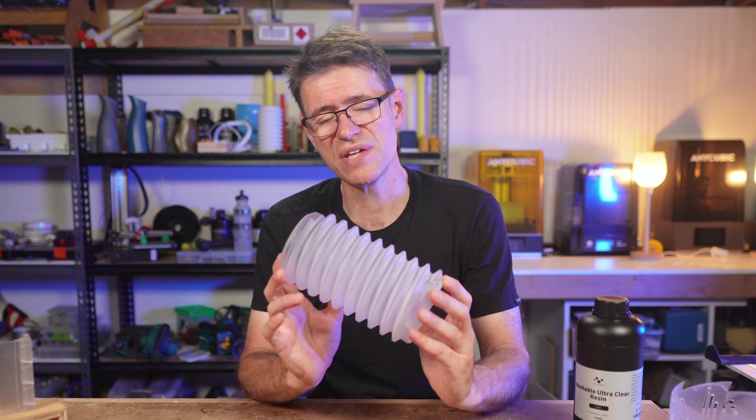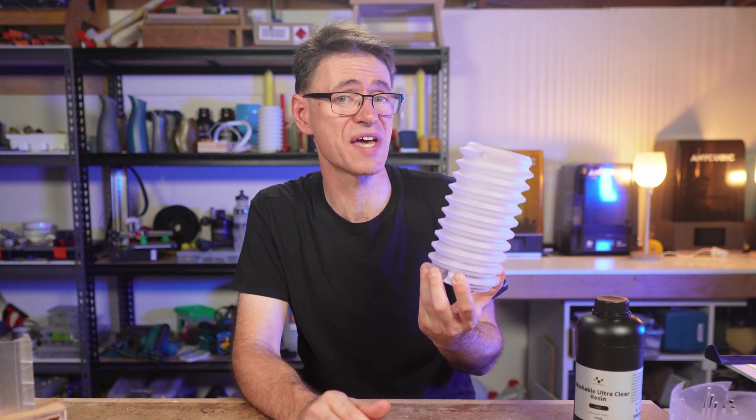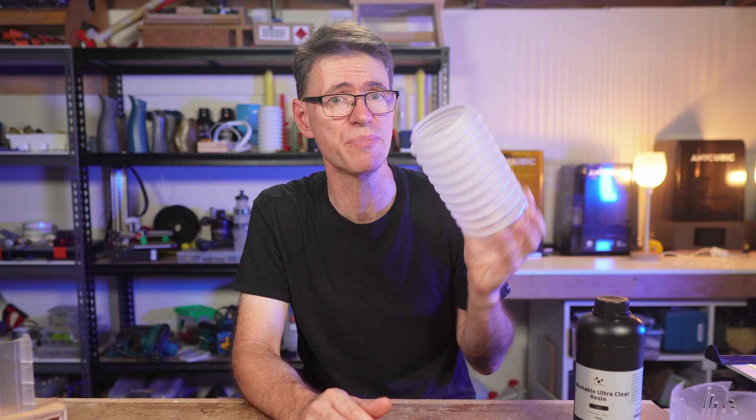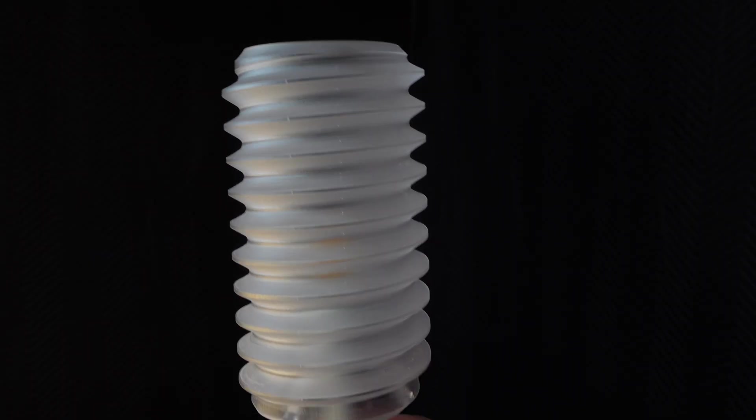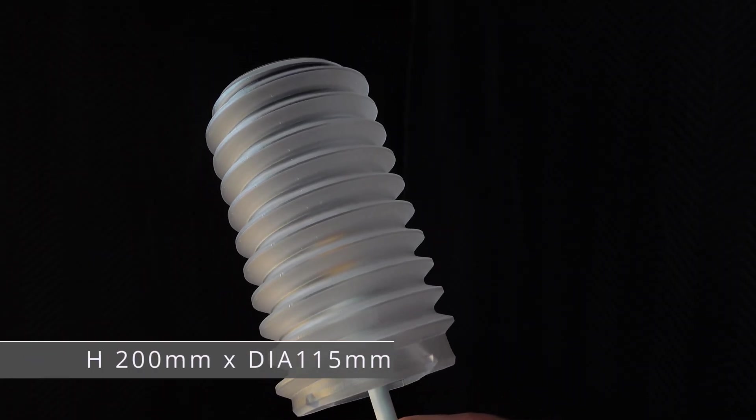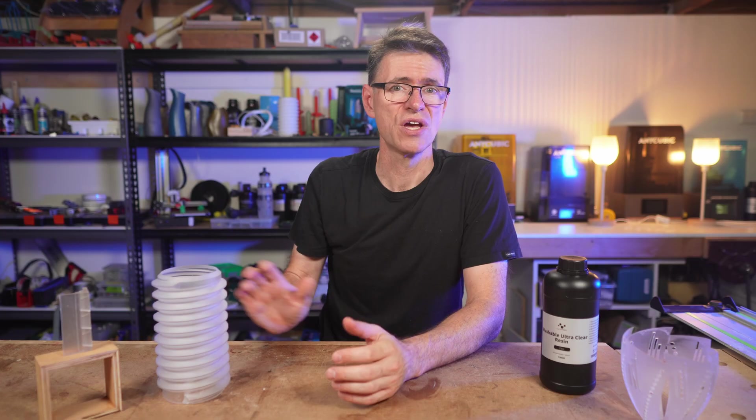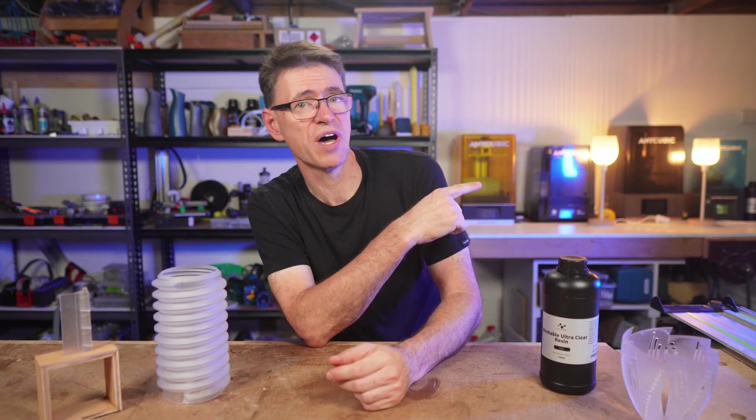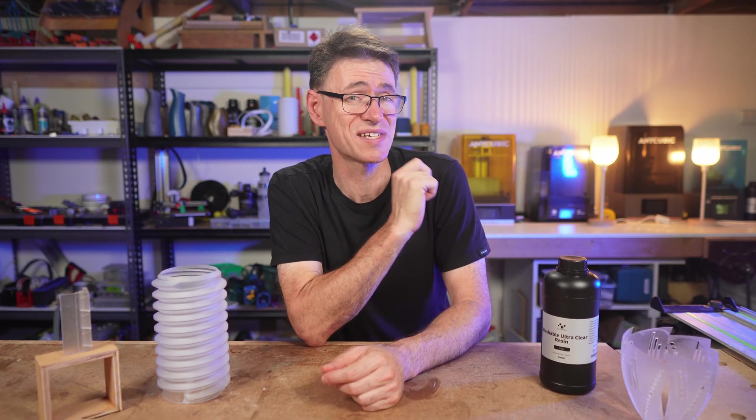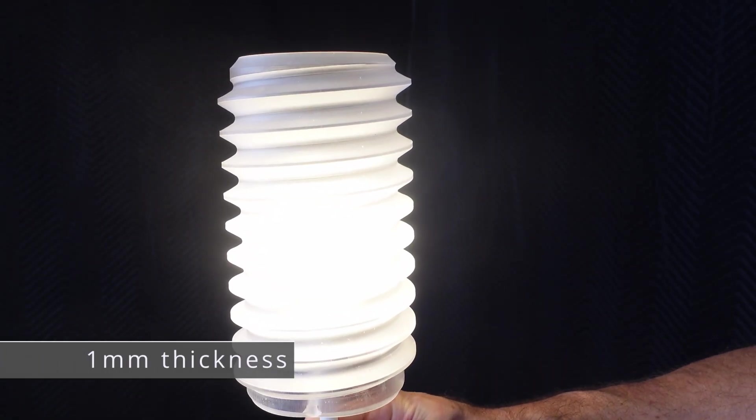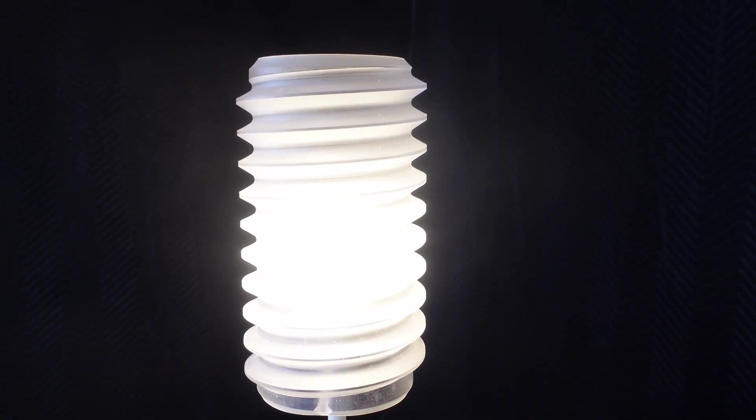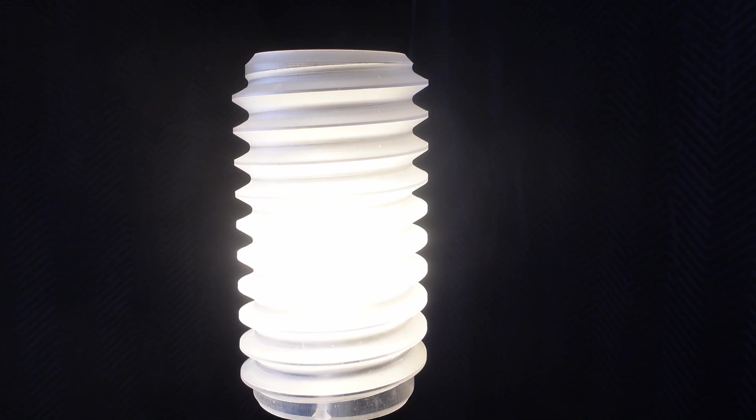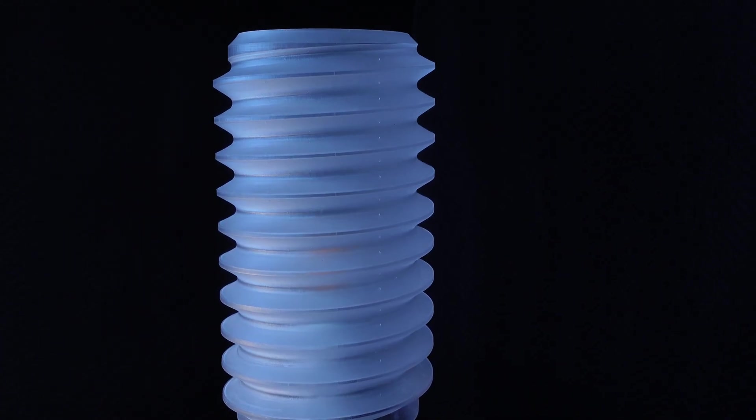But my favorite overall is this screw thread design. It's based on an M10 thread using the exact same dimensions and then scaled up and hollowed out. It's 200mm tall and 115mm in diameter. On this Anycubic Mono M7 just behind me, it printed in just 6 hours. And that's thanks to the fast printing time of the resin and the intelligent release features of these new M7 series printers. And that's worth a video all on its own.